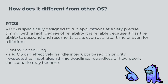How does it differ from other OS? The RTOS is specifically designed to run applications at a very precise timing with a high degree of reliability. It is reliable because it has the ability to suspend and resume its tasks even at a later time or even for a lifetime. RTOS can effectively handle interrupts based on priority, expected to meet algorithmic deadlines regardless of how poorly the scenario may become.